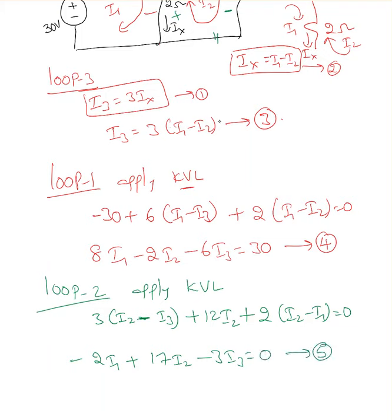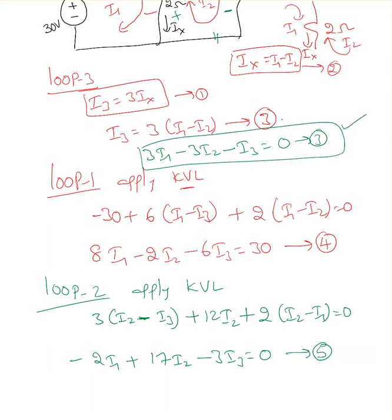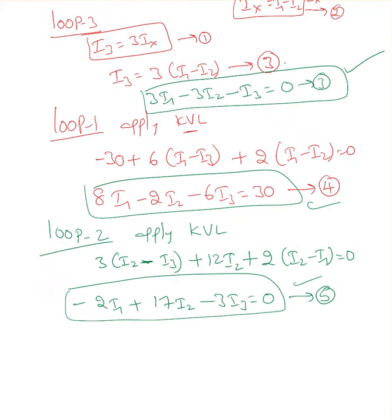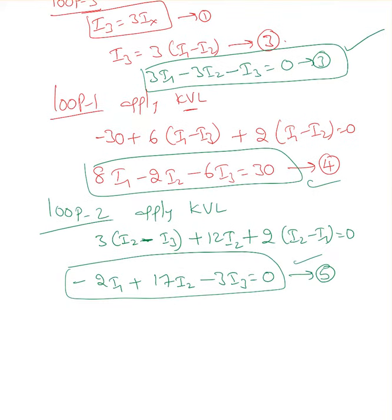So I have three unknowns and three equations. Writing them together: 3I1 minus 3I2 minus I3 equals 0 is the third equation. Three unknowns, three equations — solve for those and you can find Ix. I'm going to solve them here using substitution.